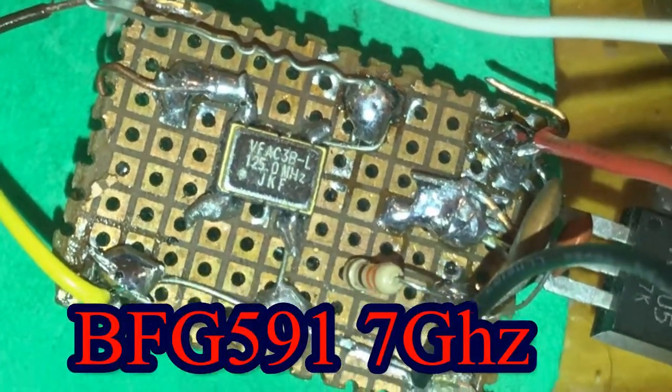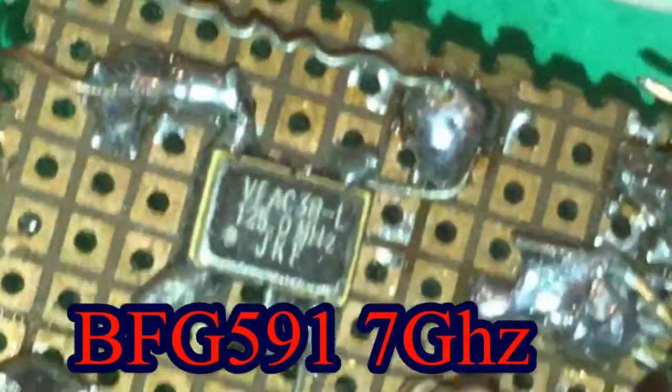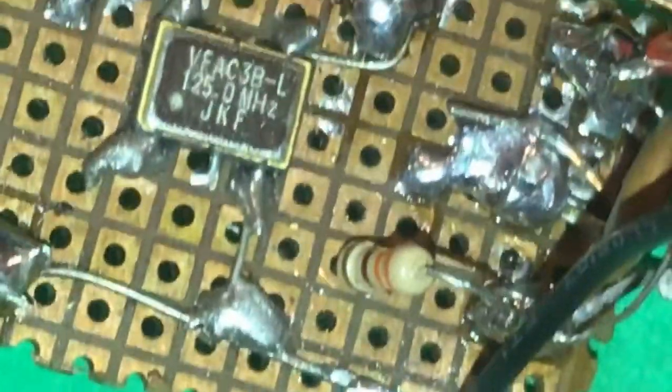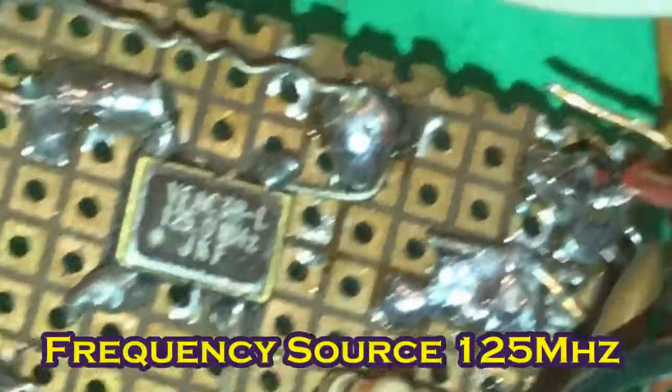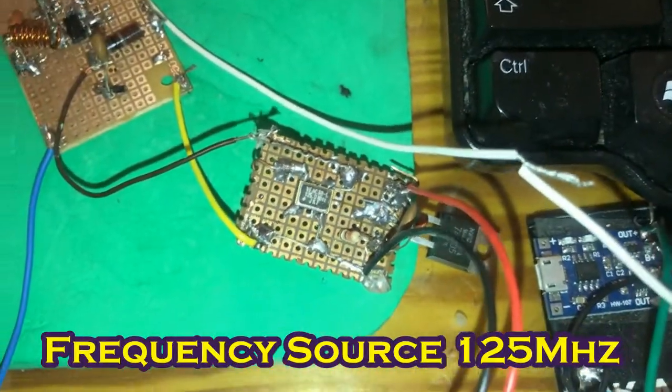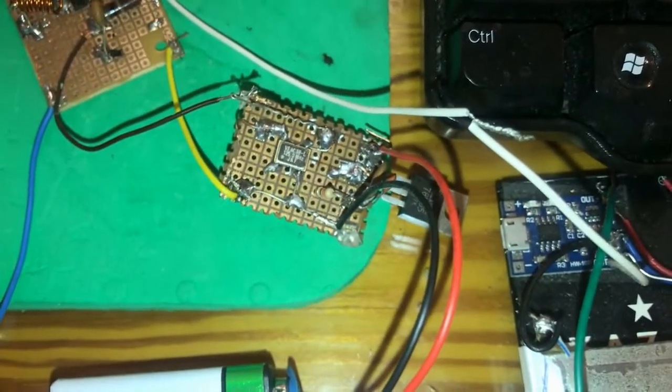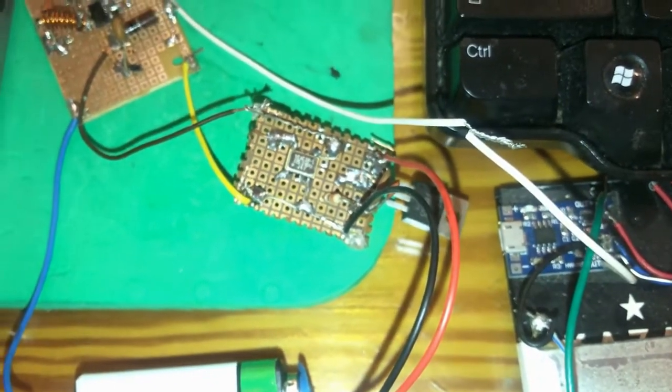Hey guys, thanks for clicking this video. The oscillator frequency is 125 megahertz, connected to a 5 volt regulator, and the regulator connected to a 9 volt fresh battery. I tried to connect the output of this oscillator to the BFG591.